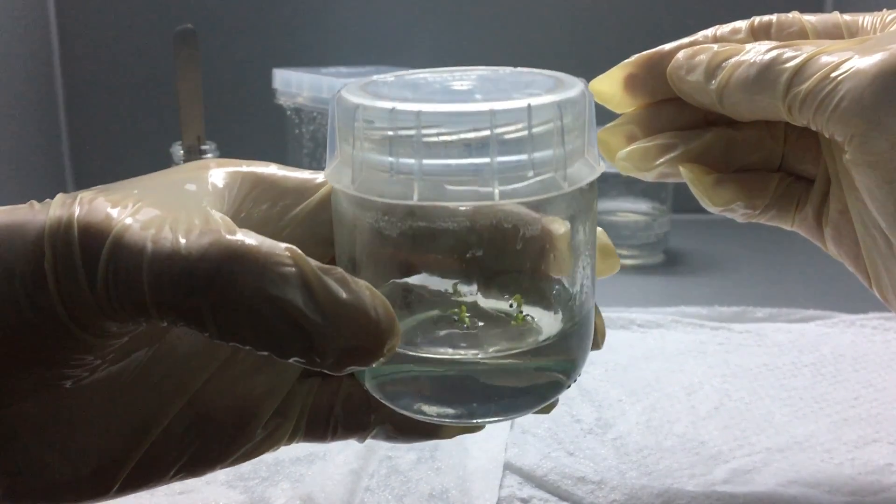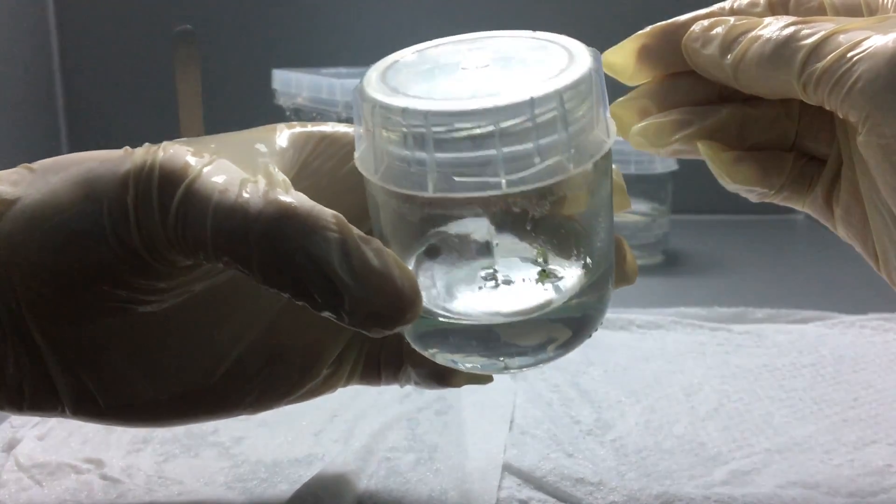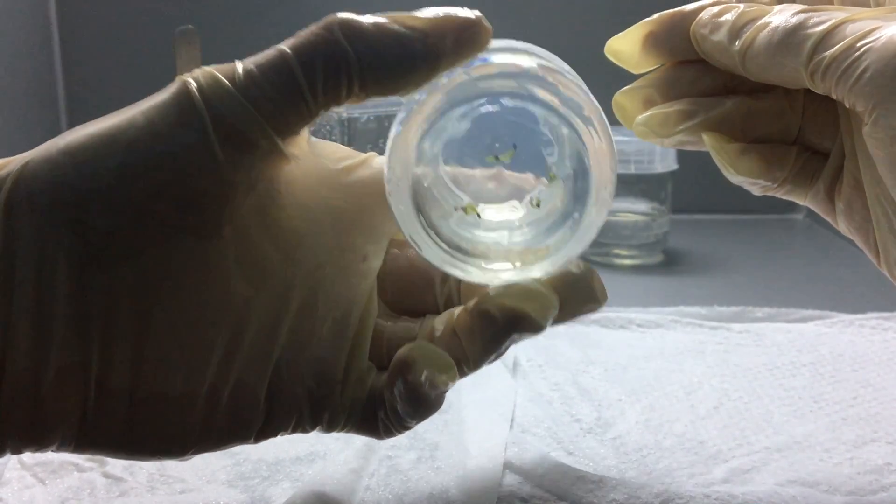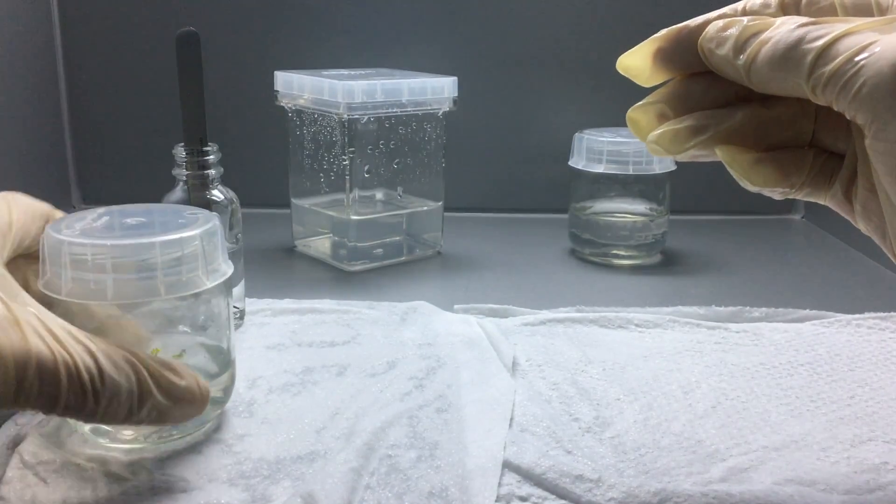Right here I have a culture of Dionaea muscipula seeds, well seedlings now. I planted four of them, and I flasked up four of them, and I got 100% germination.